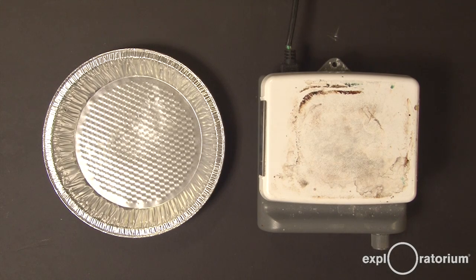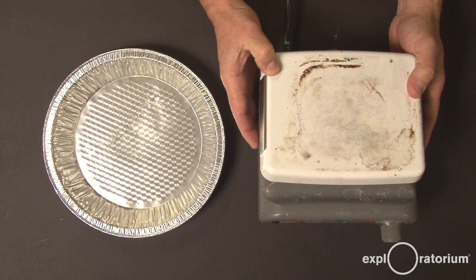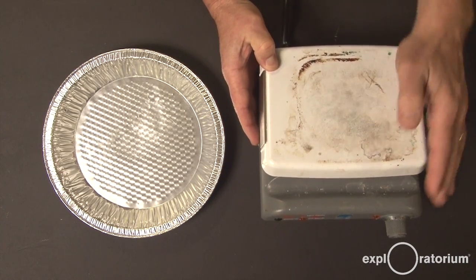To do your pie pan convection activity, you're going to need the following tools. You'll need some type of heat source, like a stove or, in this case, a hot plate that's adjustable.